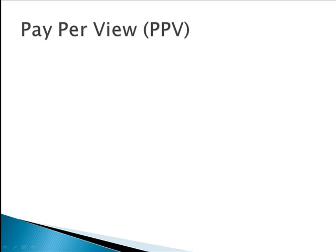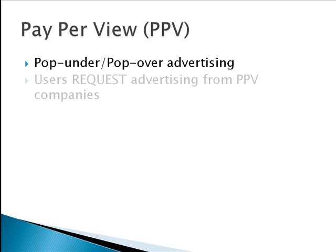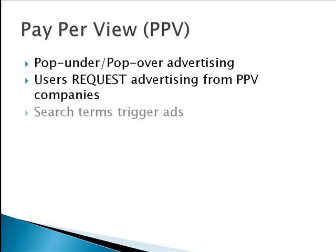In a nutshell, pay-per-view is pop-under or pop-over advertising — pages that open up when people go to certain websites. Now, I know you're thinking this is spyware or something bad, but it's not. It is a relationship where people actually request this advertising from the network. They get a piece of software they can use for free in exchange for receiving the advertising. The pay-per-view company gives the user some software that allows them to keep track of what they're searching for, and those search terms trigger the ads.